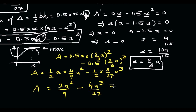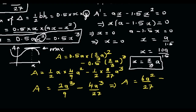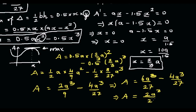Making a common denominator of 27: 2A cubed over 9 becomes 6A cubed over 27. So the area equals 6A cubed over 27 minus 4A cubed over 27, which gives the maximum area equals 2A cubed over 27.